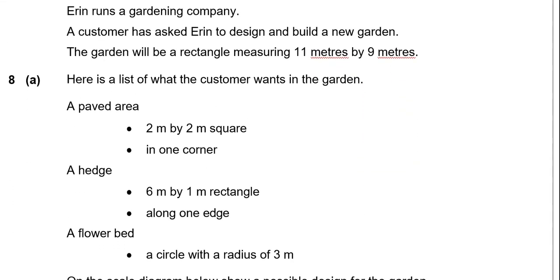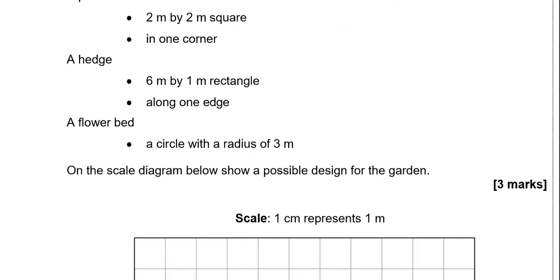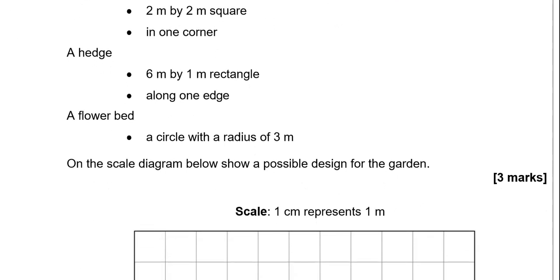Garden design. Erin runs a garden company. A customer has asked Erin to design and build a new garden. The garden will be a rectangle measuring 11m by 9m. Here is a list of what the customer wants in the garden. They want a paved area 2m by 2m square in one corner. A hedge 6m by 1m rectangle along one edge. A flower bed which is a circle with a radius of 3m.